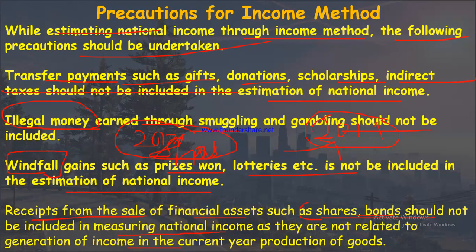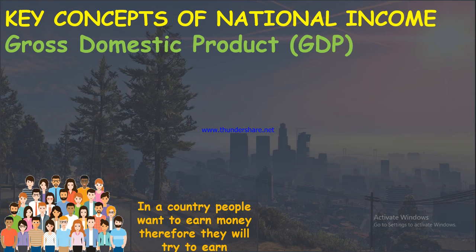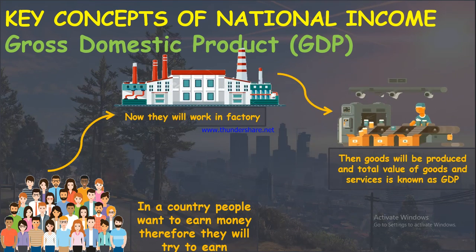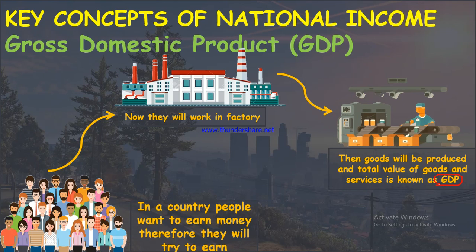Now let's talk about key concepts of national income. The first is Gross Domestic Product (GDP). People work in factories, goods are produced, and the total value of goods and services produced within a country in a current year is known as GDP. National income is a wider concept than GDP: GDP only measures goods and services, while national income encompasses all economic activities.